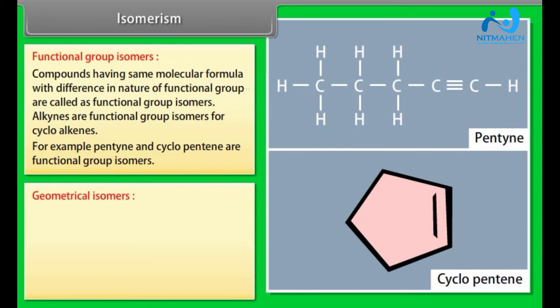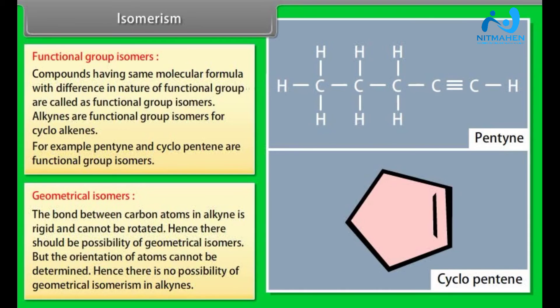Geometrical isomers: The bond between carbon atoms in alkynes is rigid and cannot be rotated. Hence, there should be possibility of geometrical isomers. But the orientation of atoms cannot be determined. Hence, there is no possibility of geometrical isomerism in alkynes.